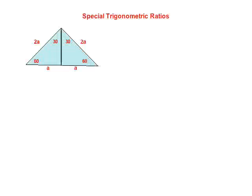Now, I've dropped an altitude down from the top to the bottom — that's a line from the top perpendicular to the bottom. In an equilateral triangle, that will divide the base in half, so 2a has been split into a and a. The top angle was split from 60° into 30° and 30°. From this equilateral triangle we were able to get a right triangle that has 30-60-90 degree angles in it.